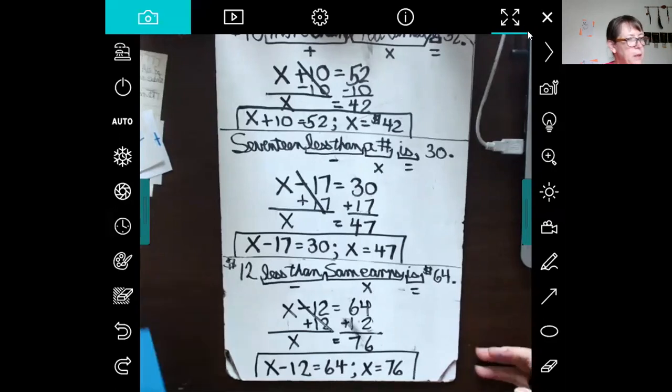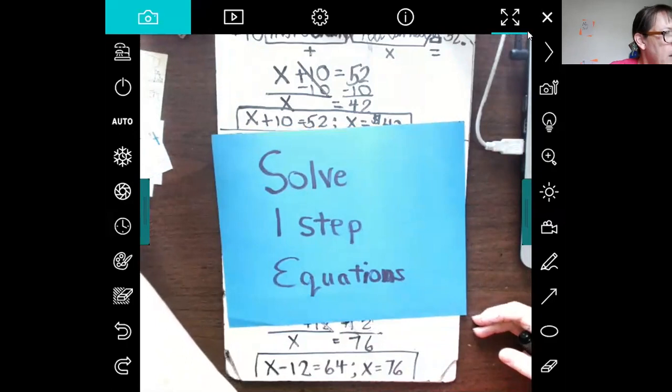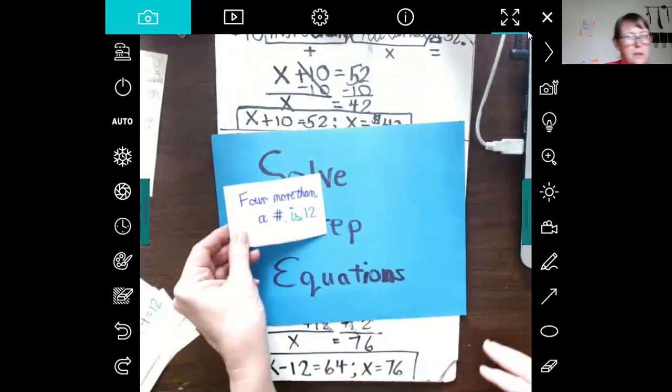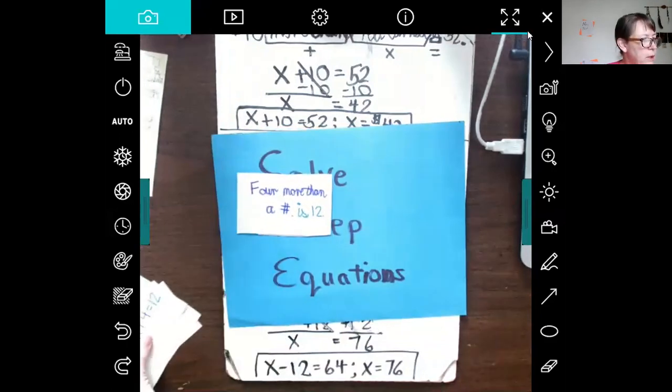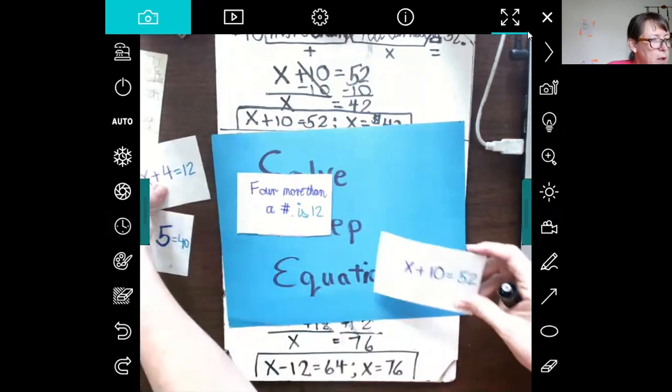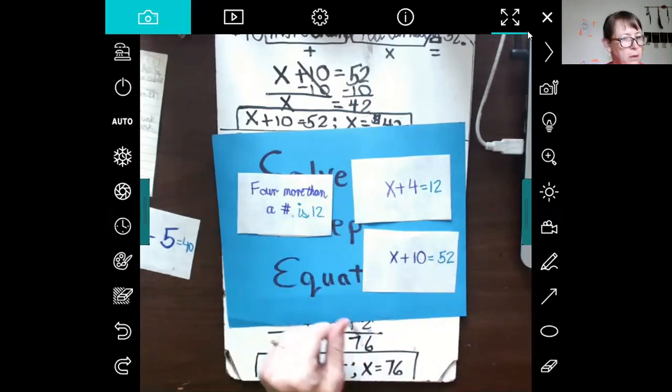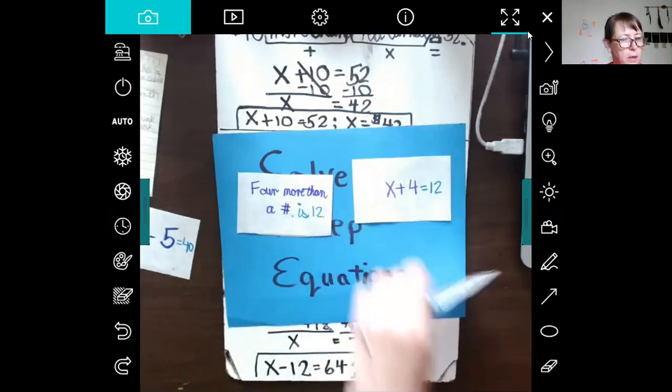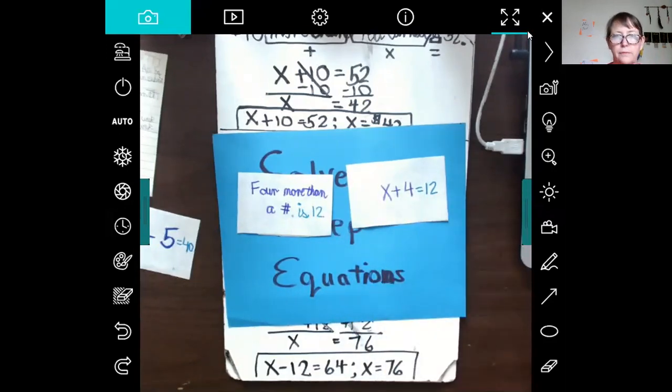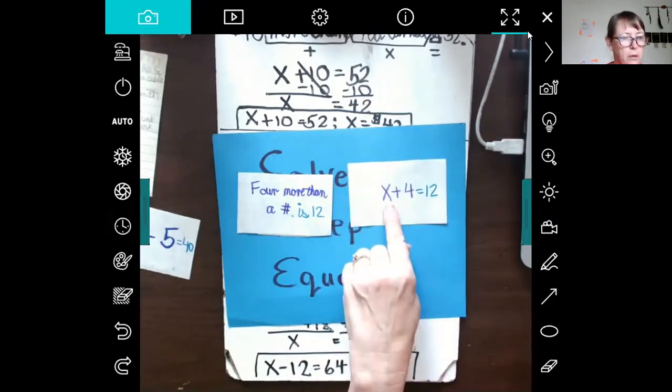So keep in mind there are two parts to solving these one-step equations. The new or added thing is that you're taking a statement, something like this—four more than a number is 12—you're translating it and then you're solving for the correct solution. Let me go ahead and start sharing my screen.